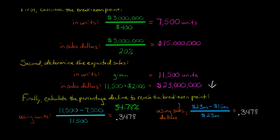Now, we get to the same place if we use sales dollars, where we say the $23 million we expect minus the $15 million to break even. So that's in our numerator. That's 8 million in the numerator divided by the $23 million that we're expecting. This is how we get the percentage decline. And again, it's 0.3478 because we get to the exact same place.